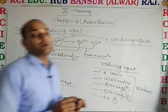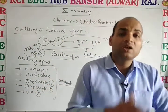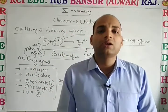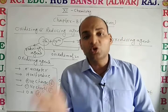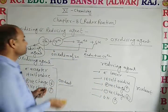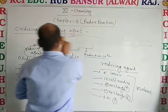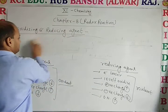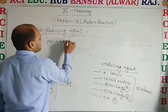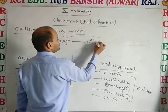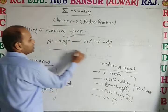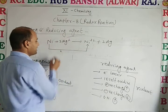Now we can identify which substance is the reducing agent and which is the oxidizing agent. For example, consider the reaction: NI plus 2Ag⁺ converts into NI²⁺ plus 2Ag. In this reaction, NI converts into NI²⁺.